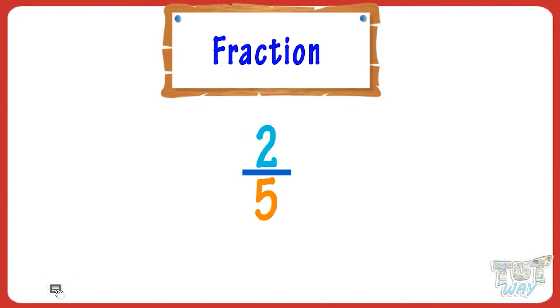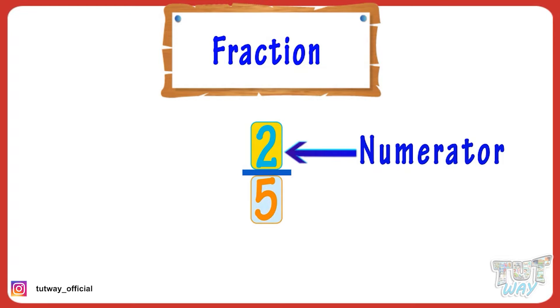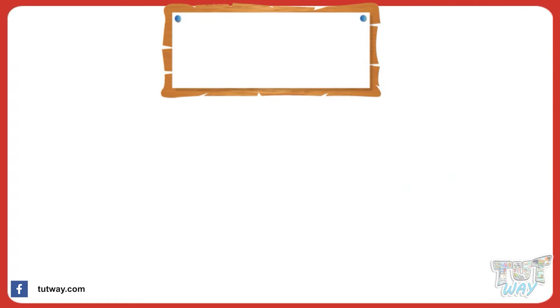We know fractions are numbers where there are two numbers separated by a line. The number above the line is called the numerator, and the number below the line is called the denominator. We also know decimals are numbers with one or more digits to the right of the decimal point.